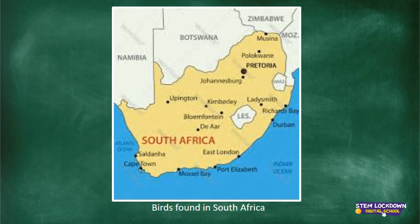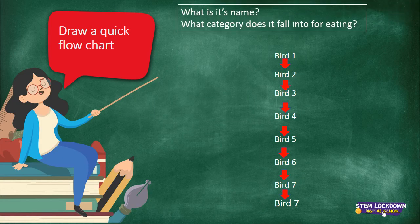In a minute we'll start listening to descriptions of 7 birds, all found in South Africa. We're going to use a flow chart again today — copy it down in your book, birds 1 to 7, and leave a space between each one. When I start reading about the birds, make a note of the bird's name and what category it falls into for eating — remember the five different kinds: carnivore, herbivore, etc. Are you ready to listen? Then let's get started.